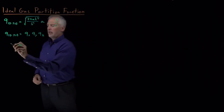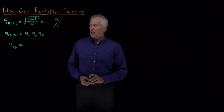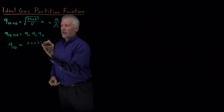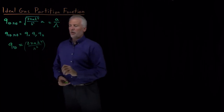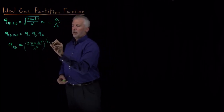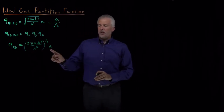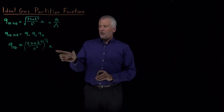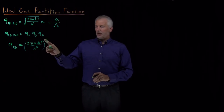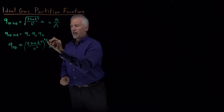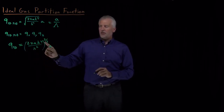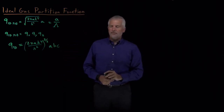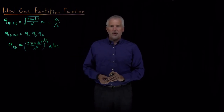The 3D partition function is the product of terms in each direction. In the x direction, that's (2πmkT/h²) raised to the one-half power times the box length in x. For y, the power becomes two-halves, and including the third term it becomes three-halves. So altogether we have these constants raised to the three-halves power, multiplied by box lengths in x, y, and z — all multiplied together. That's our 3D partition function.